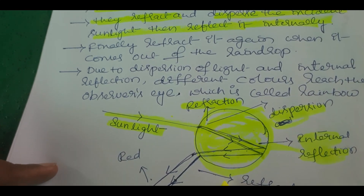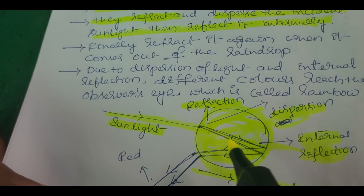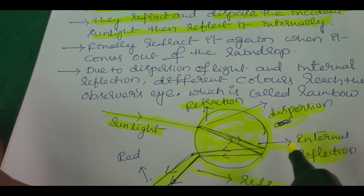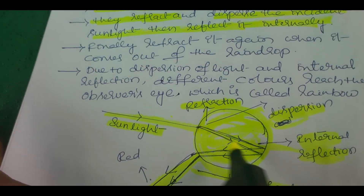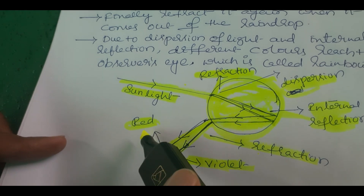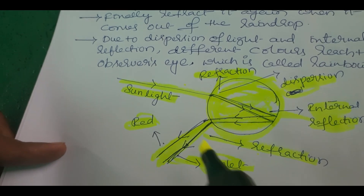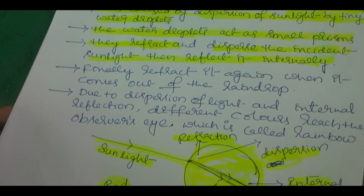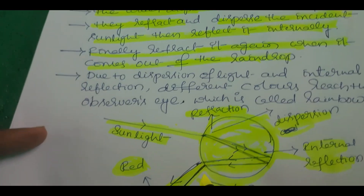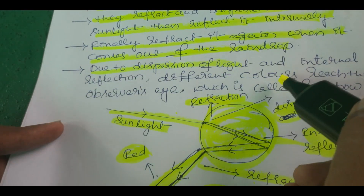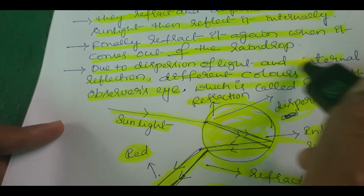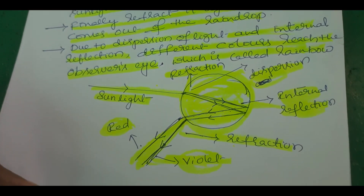It undergoes four phenomena: refraction, dispersion, and internal reflection. Refraction occurs, then the ray bends out; dispersion splits the white light ray; then internal reflection occurs, and the ray comes back out. The outermost color is red (least deviated) and the innermost color is violet (most deviated). So that covers the eight marks expected answer.